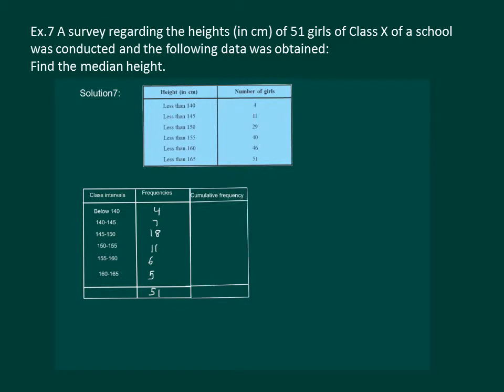To find the median, let us also write the cumulative frequencies correspondingly in the table. Now we calculate n is given to be 51, so n by 2 is equal to 51 by 2, that is 25.5.